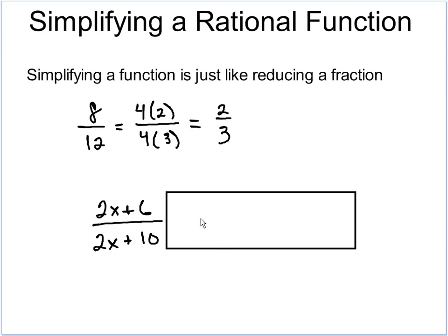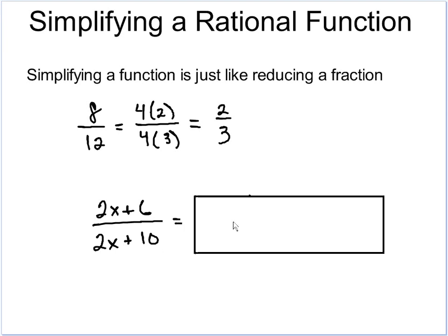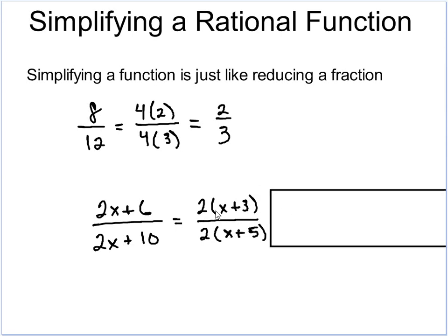It should be pretty obvious that I can divide everything by 2. So I'm going to factor out a 2 on the top. So I'm left with 2 times x plus 3 on the top and 2 times x plus 5 on the bottom.